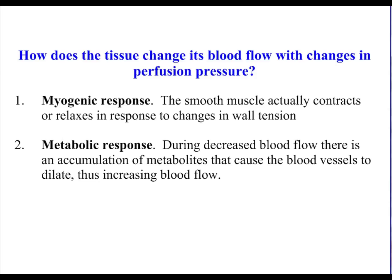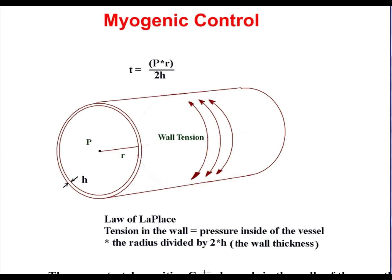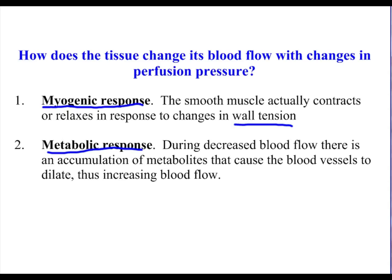So how do the tissues regulate their blood flow? There are two mechanisms: one is called myogenic and the other is metabolic. With the myogenic response, the muscle actively contracts or relaxes in response to wall tension. Notably, you can take a vessel out of tissue and it will still respond that way — it's a result of changes in wall tension. With the metabolic response, metabolites that are dilators accumulate and cause the vessel to dilate.